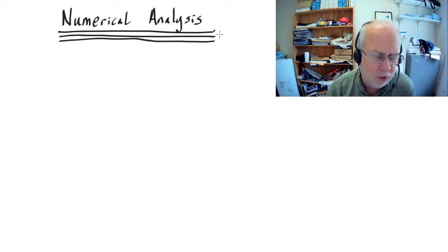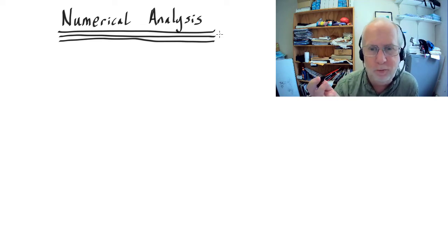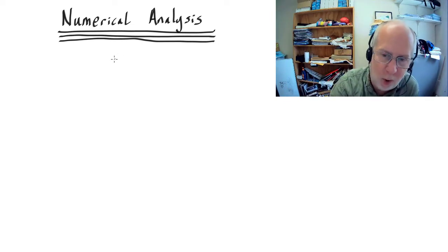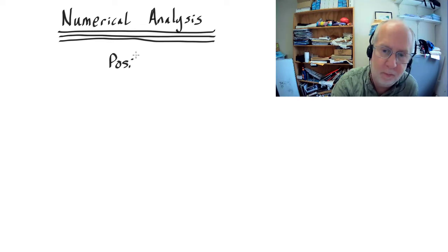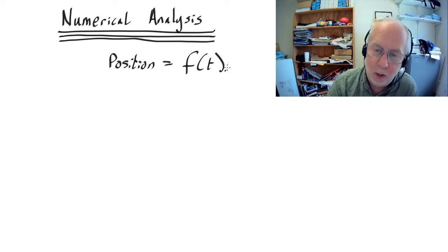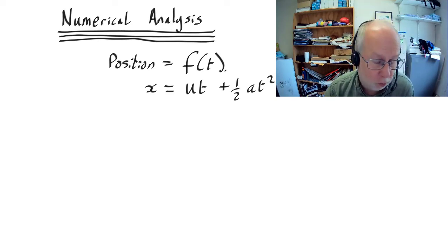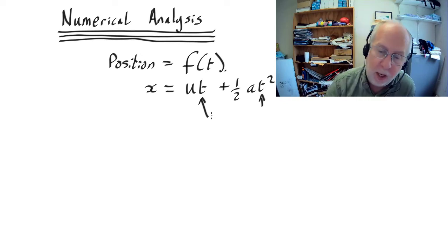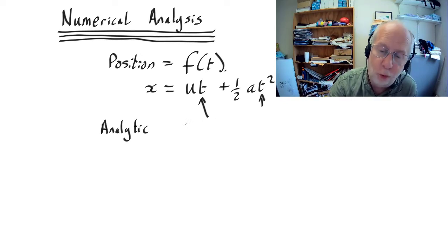So how is numerical analysis different from what you've normally done? Well normally what you've done is, let's say you're trying to work out where some object is going to be at some point in the future. What you would do is you'd have an equation. For example if it's motion in one dimension with constant acceleration, x is going to be ut plus half at squared. So what you do if you want to know where the object is going to be in 15 seconds is you'd substitute 15 into the equation and then you'd get the position.